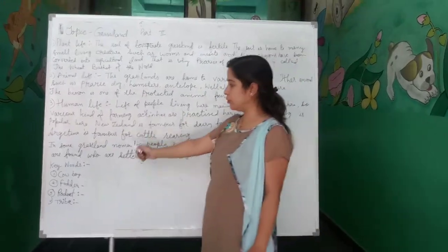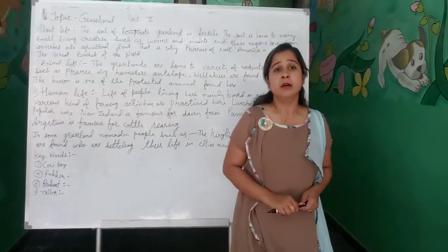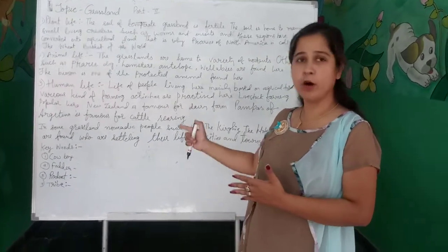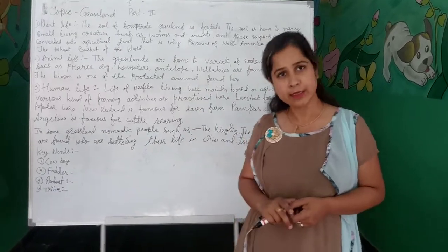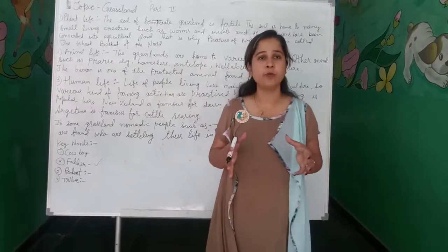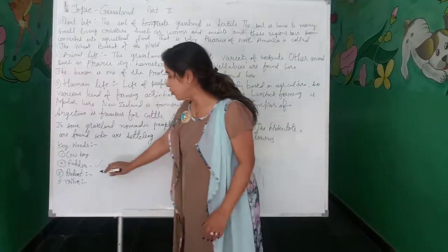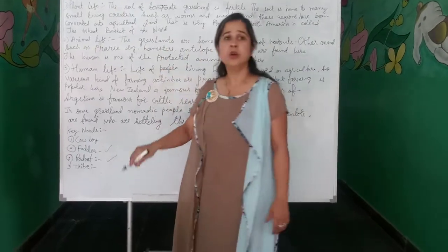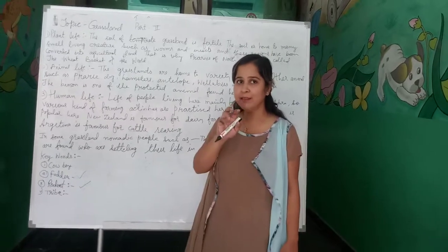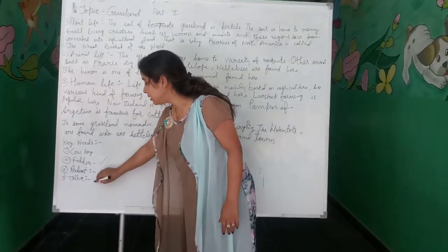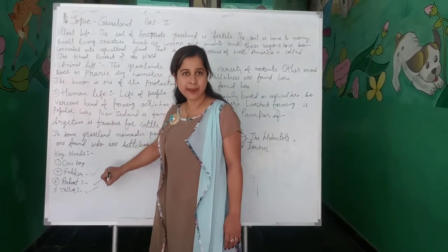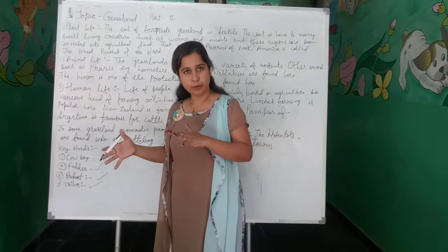Let us discuss some keywords. Cowboy: cowboys are hired people who take care of animals and cattle. Fodder: fodder is a coarse kind of food — dried food used to feed animals. Rodent: rodents are those animals which belong to the rat family and which gnaw their food by biting with their front teeth. Tribe: a tribe refers to people who don't have a settled home and keep moving from one place to another.